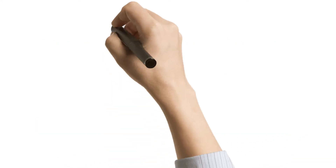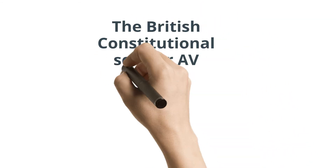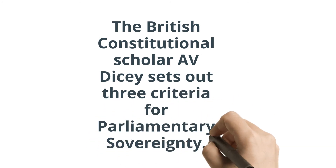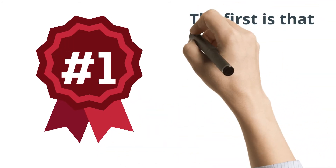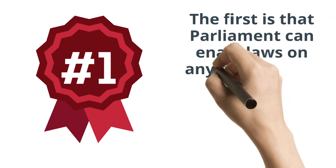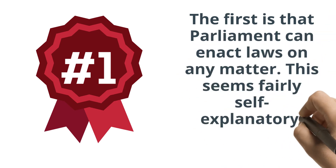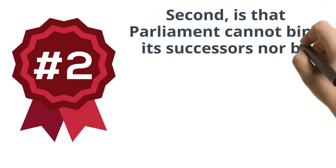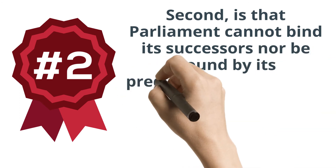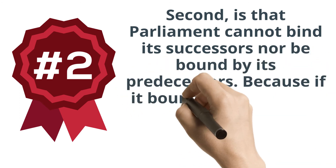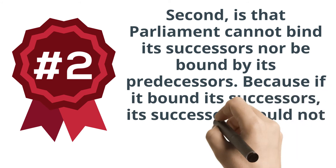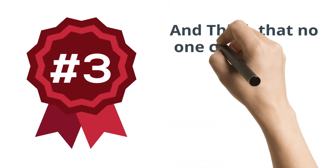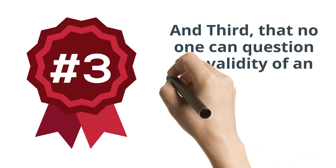The British constitutional scholar A.V. Dicey sets out three criteria for parliamentary sovereignty. He says, first, that Parliament can enact law on any matter — fairly self-explanatory. The second is that Parliament cannot bind its successors, nor be bound by its predecessors, because if it bound its successors, its successors would not be sovereign.